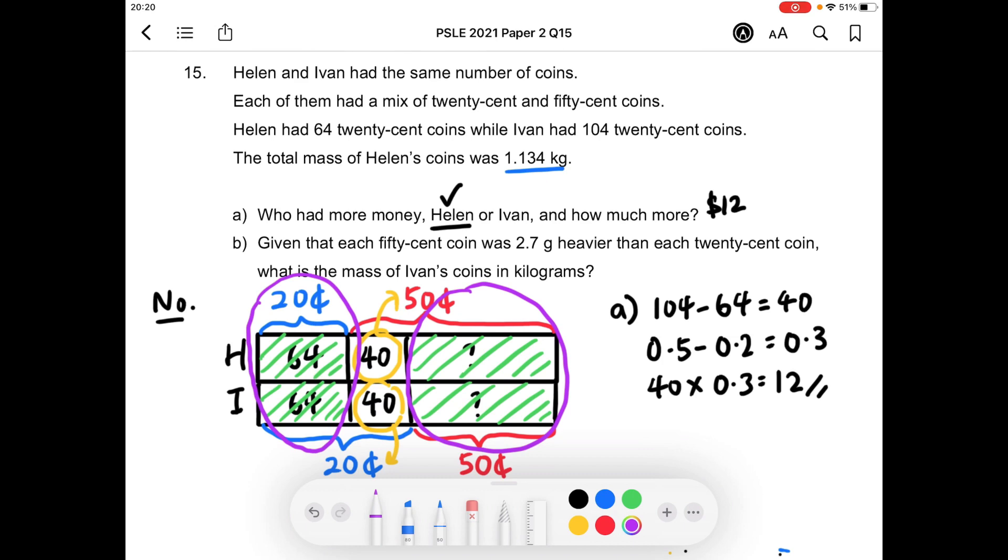So once again, the only difference in mass is due to the 40, 50 cent coins that Helen had, and the 40, 20 cent coins that Ivan had. And knowing that one 50 cent coin was 2.7 grams heavier than one 20 cent coin, for part B,